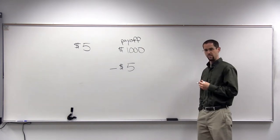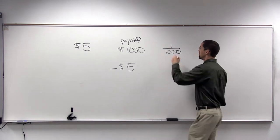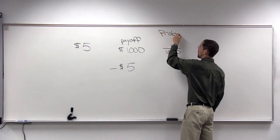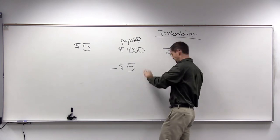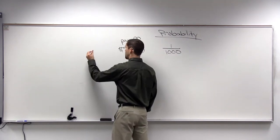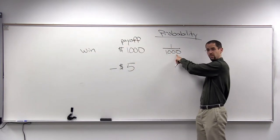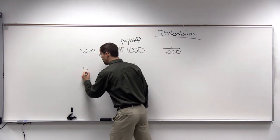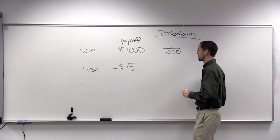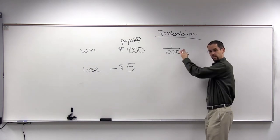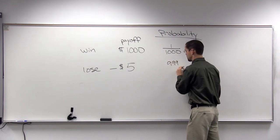Suppose the particular lottery game that you're playing has a 1 in 1,000 probability of winning. Again, this is if you win. You win $1,000. If you win, the probability of winning is 1 in 1,000. If you lose, you lose $5, negative 5. And the probability of losing is all the other times out of 1,000 that you didn't win. 999 times out of 1,000.